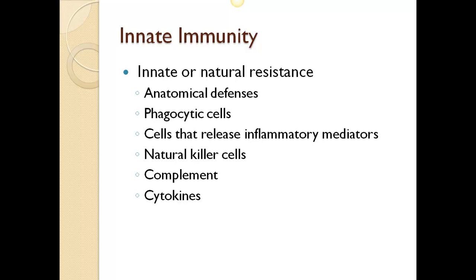Innate immunity is our natural resistance. We have phagocytic cells in our body that eat toxin-producing cells. We have natural killer cells that patrol our body and stimulate white blood cell production. We have cytokines that target abnormal cells. Innate immunity is also known as the nonspecific immune system. It comprises cells and mechanisms that defend the host from infection by other organisms in a nonspecific manner.